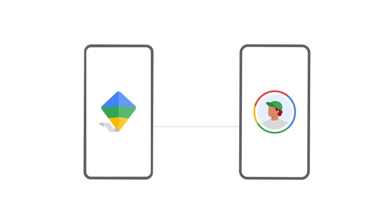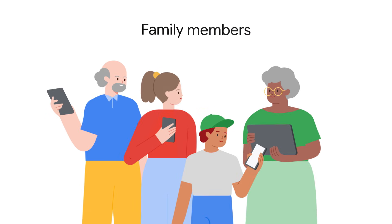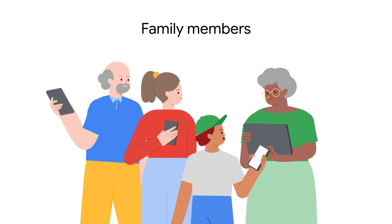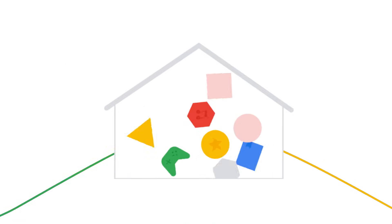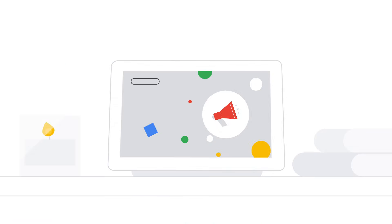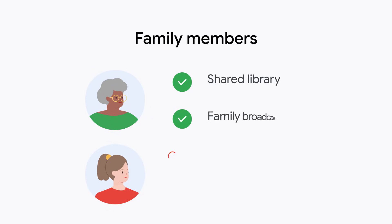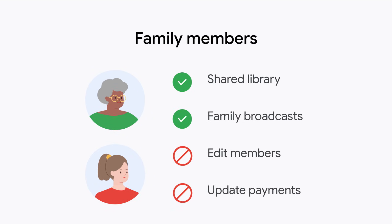Parents can also use Family Link to help supervise Google accounts for children. A family member can enjoy all of the benefits of the family group, like access to the content in your shared library or family broadcasts, but they can't make changes to other family members or update the family payment method.